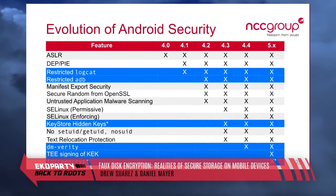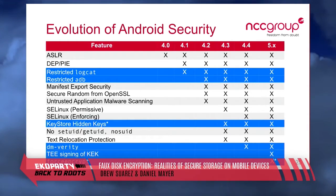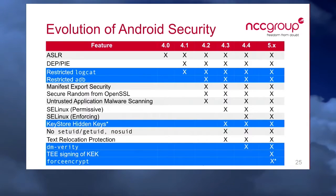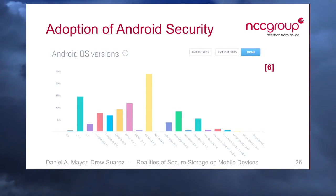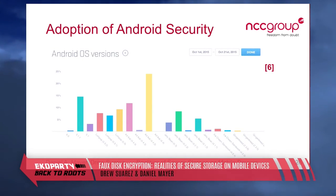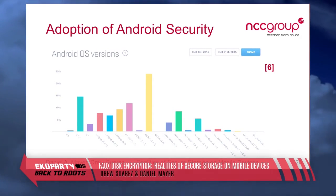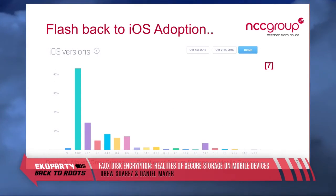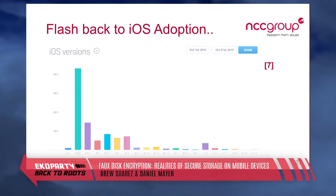Two items of note: 'keystore hidden keys' and 'force encrypt,' which I'll cover in more detail. Looking at Android version adoption, you've all heard of the fragmentation problem. The majority of people are still on KitKat 4.4 — a two-year-old version — while Marshmallow, which came out about a week ago, is very little. Contrast that with iOS, where a much bigger population uses the latest version. Google may fix things, but you may not get that patch for a very long time, if ever.